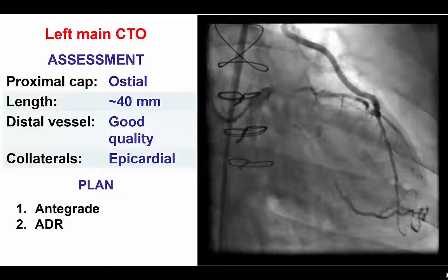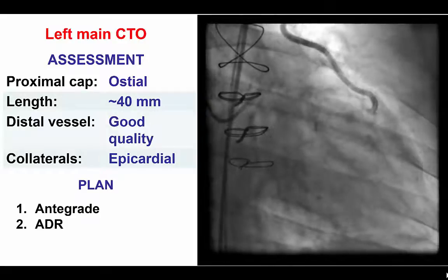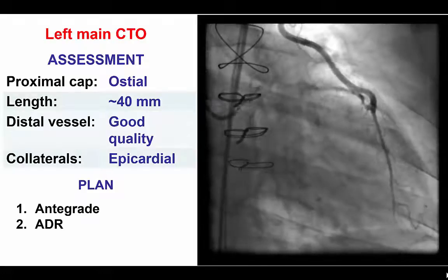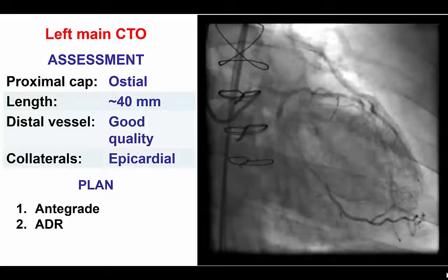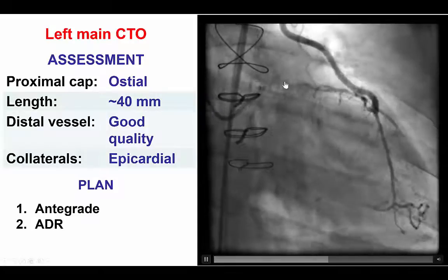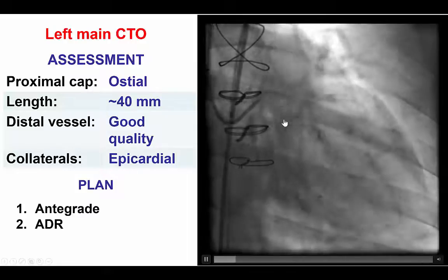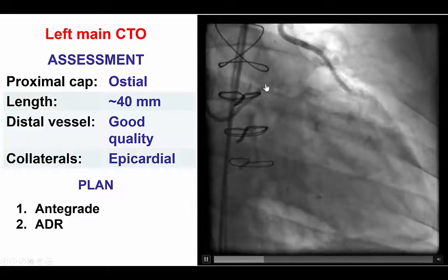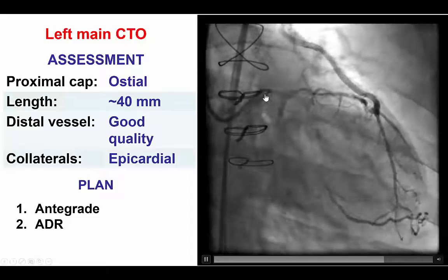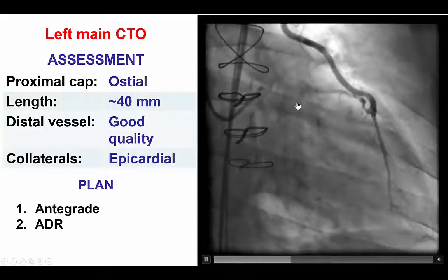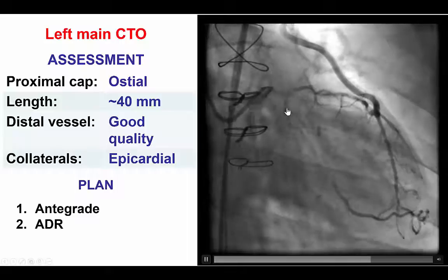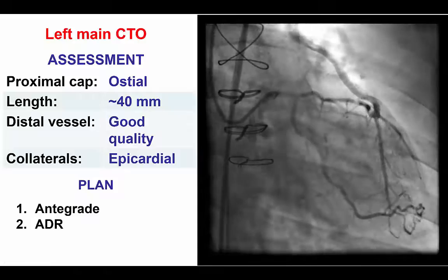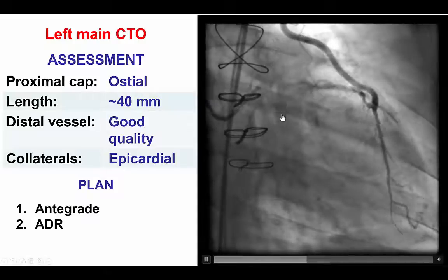This was a patient with previous coronary bypass graft surgery who had a patent LIMA graft to LAD and patent right coronary artery. The patient had angina and was referred for PCI of the circumflex. The patient did have a left main occlusion with reconstitution of the proximal circumflex into a very large obtuse marginal branch. This was an ostial occlusion with a tapered cap. There was significant tortuosity within the occlusion with a very tight bend at the ostium of the circumflex, which became a problem as we will see. The lesion was about 30 to 40 millimeters long with heavy calcification.